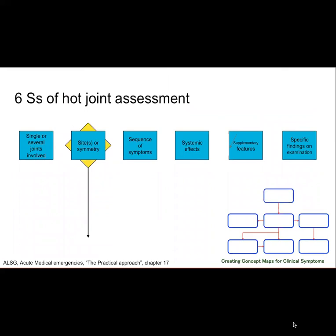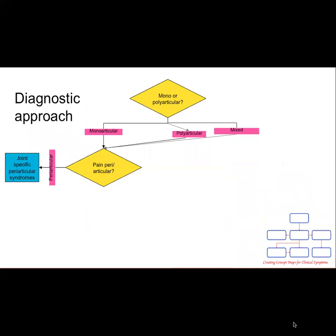Next, we need to carefully identify whether it comes from the joint itself or a periarticular problem. Then if it is affecting multiple joints, we check whether they affect symmetrically or not. If someone comes with joint pain and swelling, it is important to look for joint-specific periarticular syndrome. For example, foot and ankle pain and swelling might be Achilles tendonitis, plantar fasciitis, etc.